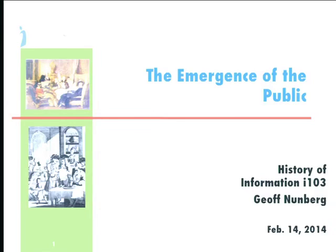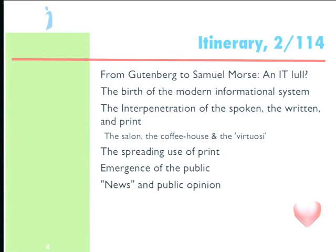So what we're going to cover today is more on this period between printing and the telegraph. In the introductory class we talked about the difference between a history of information and history of information technology, and I said that if such classes are offered at all, they tend to jump from printing to the telegraph because nothing interesting happened in between. Well, a good deal happened if you're not focused exclusively on technology. We'll talk about some of that, and in particular the birth of what we call the modern informational system.